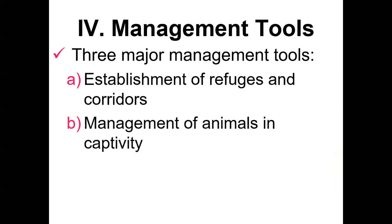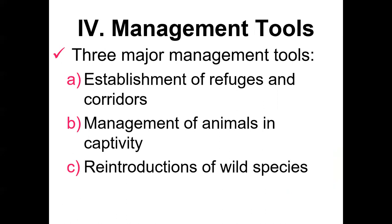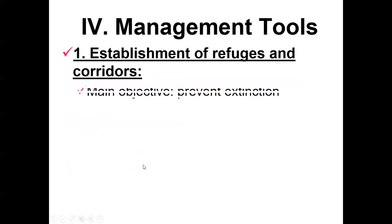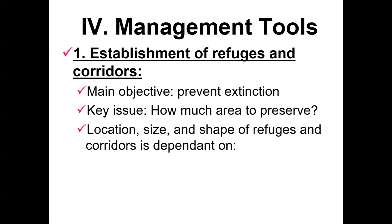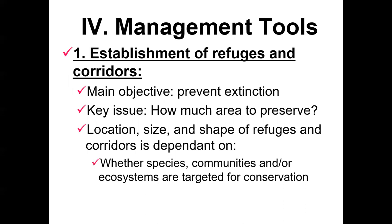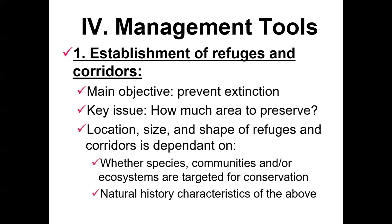So what can we do to manage wildlife populations? As natural areas shrink or are modified, species and ecosystem preservation becomes a really important management task. The ideal situation is to retain large areas of diverse habitat in as pristine a form as possible, but that's not really possible at very large scales, so active management is a better option. There are three management tools: the establishment of refuges and corridors, management of animals in captivity, and subsequent reintroduction of individuals. The location, size, and shape of refuges and corridors all depend on whether you're focused on a species, a community, or an ecosystem, and on the natural history characteristics of the target.